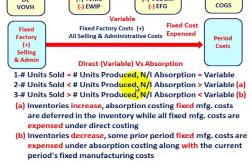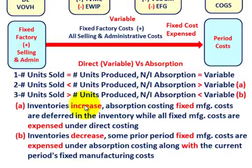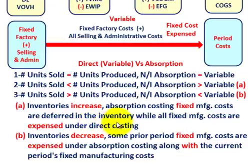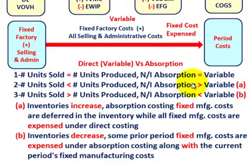In the second case, where units sold are less than units produced, absorption costing net income will be greater than variable costing. Inventories increase because more is produced than sold. Under absorption costing, fixed manufacturing costs are deferred in inventory, while under variable costing all fixed manufacturing costs are expensed immediately. So absorption costing shows higher income because those fixed costs haven't been recognized yet.